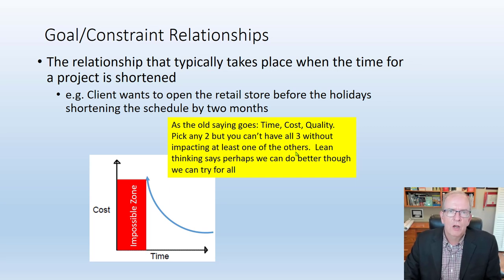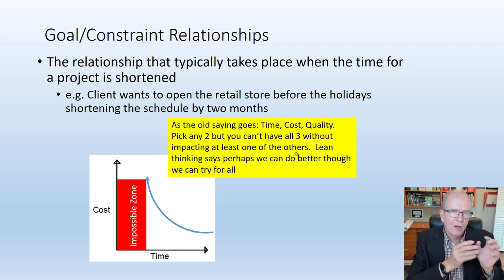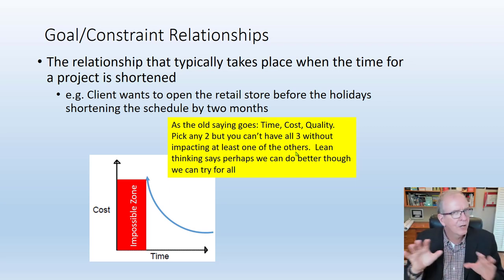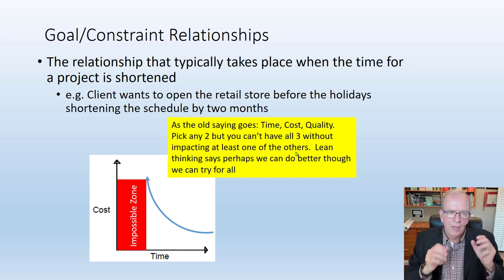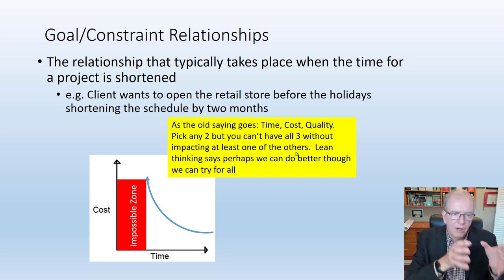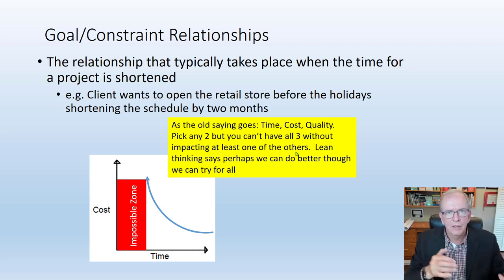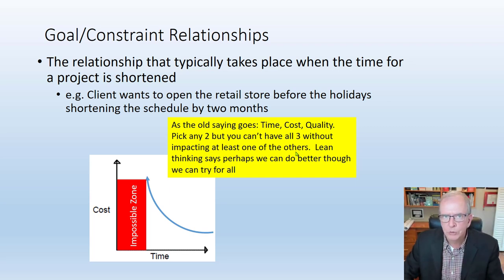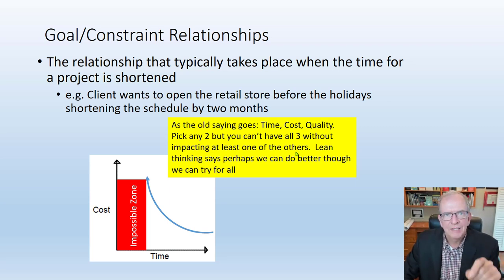Doing better to try to impact all three also involves changing the contract model that we're dealing with, so that it's not as adversarial — that the incentives are there for the team based on how the project does, not how individual trades do. Trades tend to optimize for themselves because the incentive is there for them. In a lump sum contract, they've got a total price that they put in, and if they can get in and get out, they can make a profit. If they take longer and they're held up and have to do rework, then they don't make a profit. So the incentives in a lump sum are there for individuals to optimize.